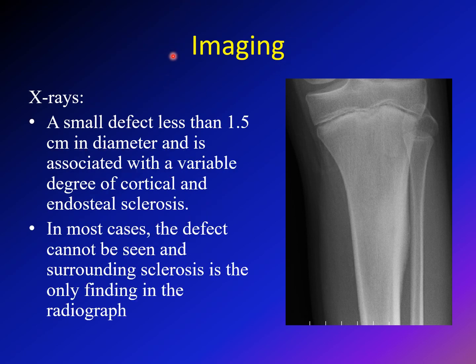Regarding imaging, x-rays may show a small defect surrounded by sclerosis. However, in most cases you will not see the nidus itself — all you will see is the surrounding sclerosis, as shown here with normal cortex above and below and obvious thickening and sclerosis in the affected area.